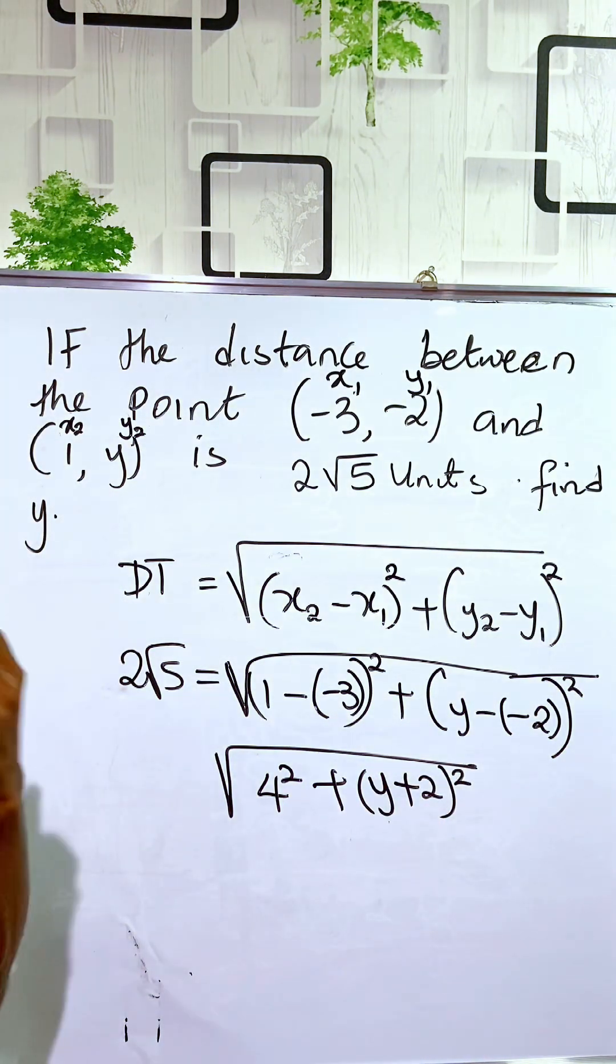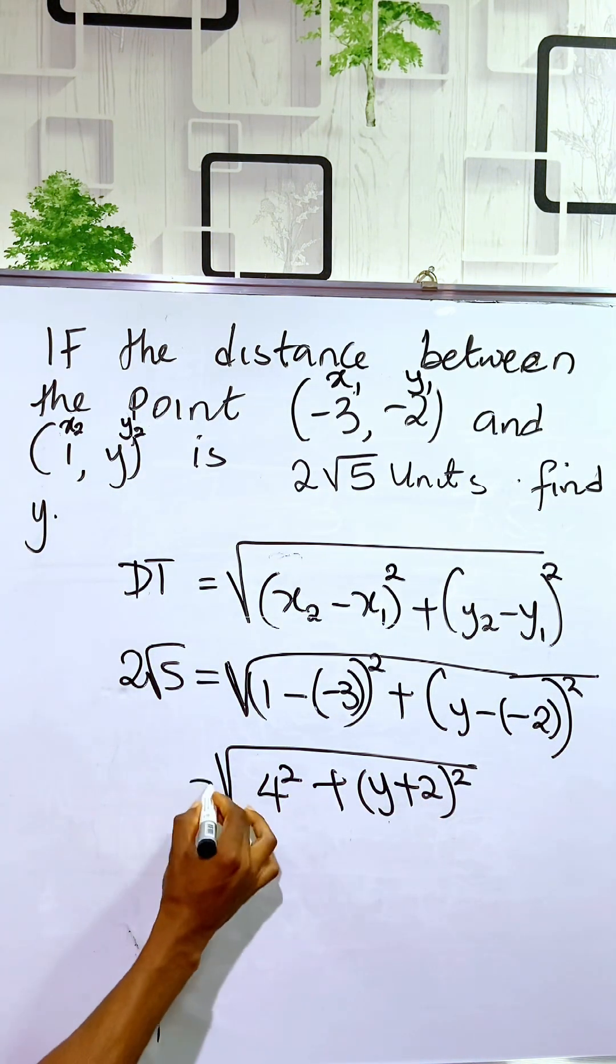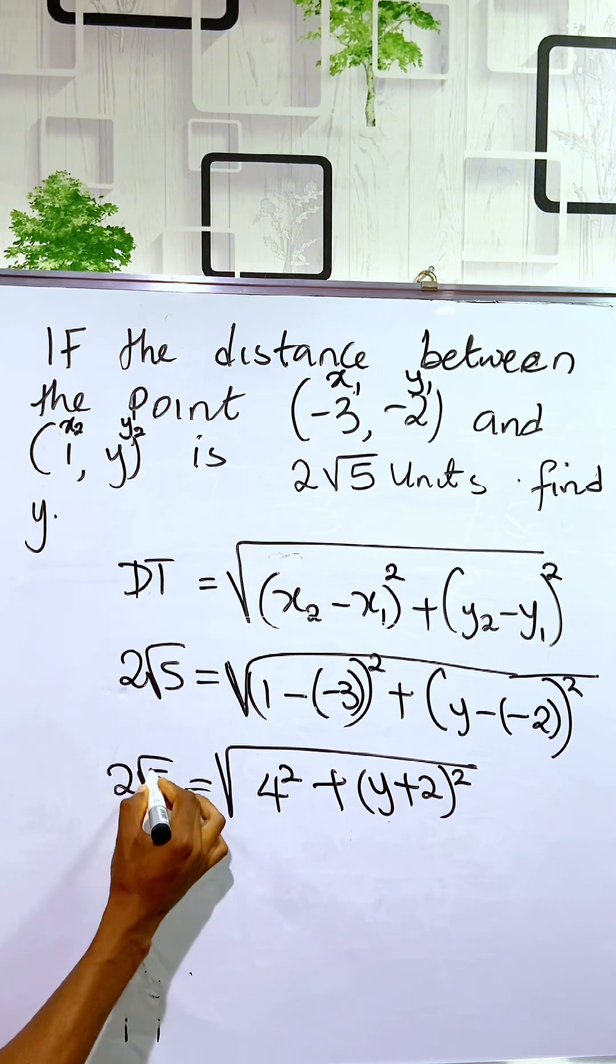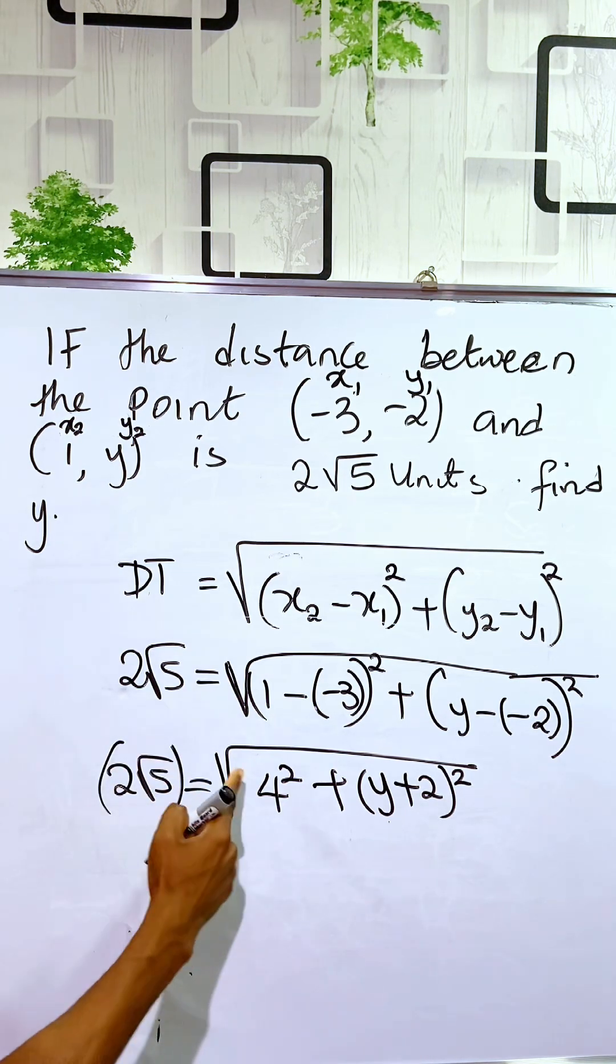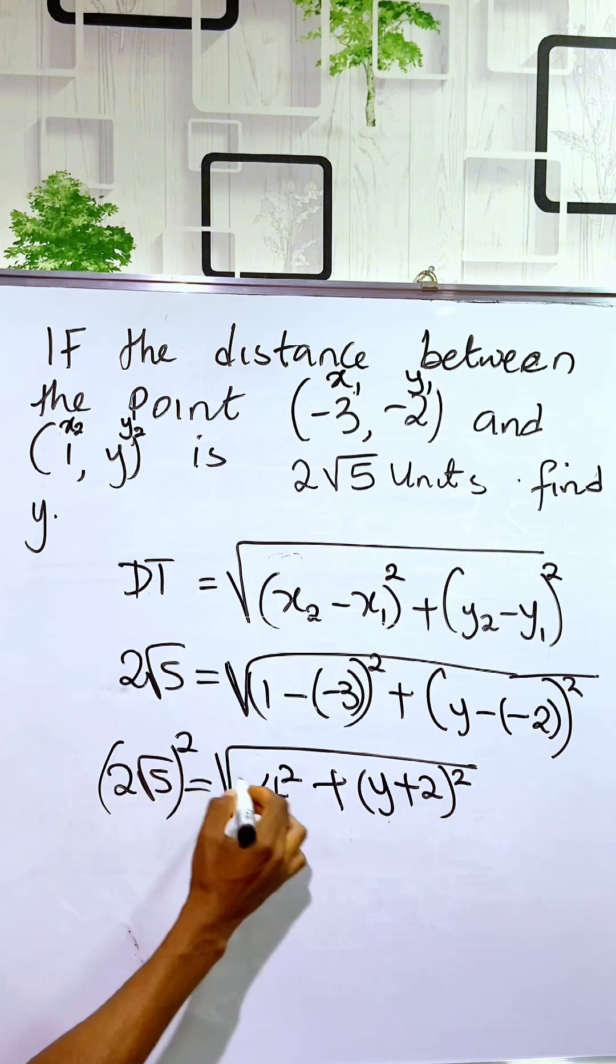So to simplify this, it is very easy and this equals 2√5 units. So to remove this square root, we just have to square both sides.